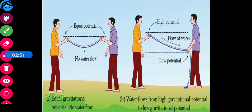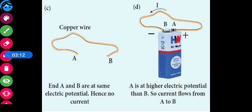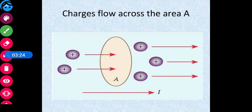Water can flow only when there is a difference in height. When both ends are at the same height there is no water flow; if one end is higher and the other lower, only then can water flow. Similarly, when point A is at higher potential and B is at lower potential, current flows from A to B. When A and B are at the same potential, no current flows. Similarly, charges flow across cross-sectional area A.